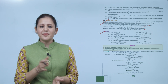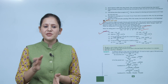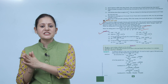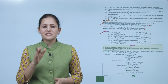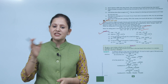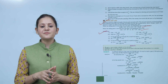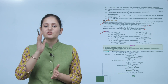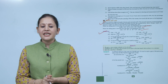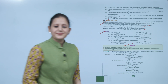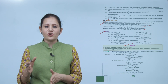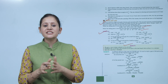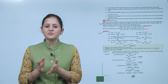Key formulas: Gain = SP − CP. Gain% = (Gain/CP) × 100. Loss% = (Loss/CP) × 100. To find SP: SP = [(100 + Gain%)/100] × CP, or SP = [(100 − Loss%)/100] × CP. To find CP: CP = [100/(100 + Gain%)] × SP, or CP = [100/(100 − Loss%)] × SP. Note: gain or loss is always calculated on the cost price.